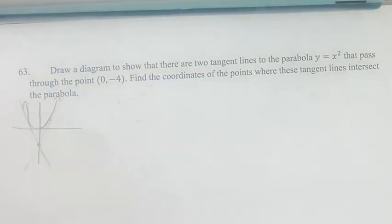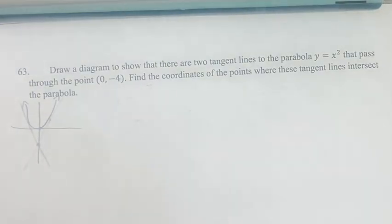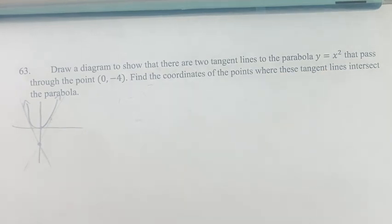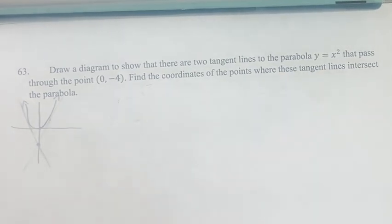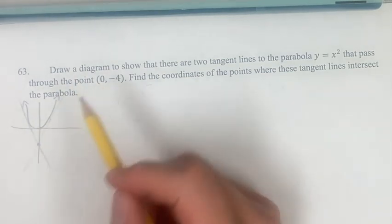Hello and welcome back to another video. In this problem, we're looking at the parabola y equals x squared. First we want to draw a diagram to show that there are two tangent lines to this parabola that pass through the point (0, -4).